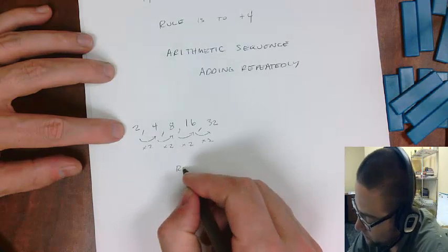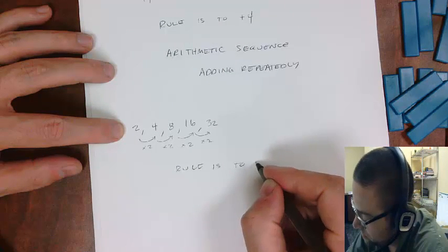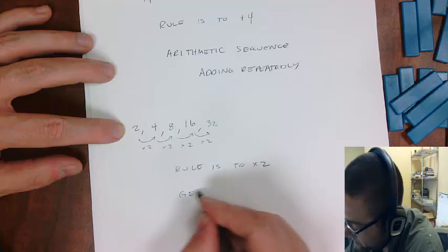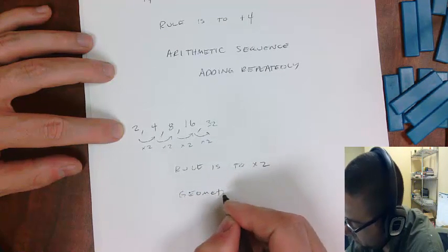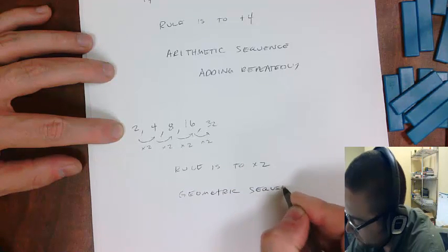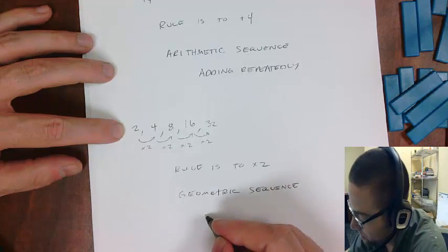So this rule is to multiply by 2. And now this is called a geometric sequence. And it's when you're multiplying repeatedly.